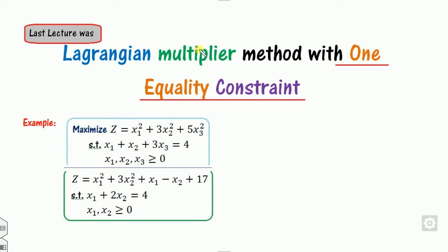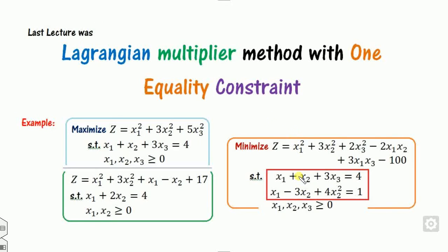What we discussed in the last lecture is the Lagrange multiplier method with only one constraint of equality sign. We discussed this type of problem where there is only one constraint. Now in this lecture we will see when there are more than one constraints — it may be two, three, and so on — and we will apply the same approach discussed in the last lecture.